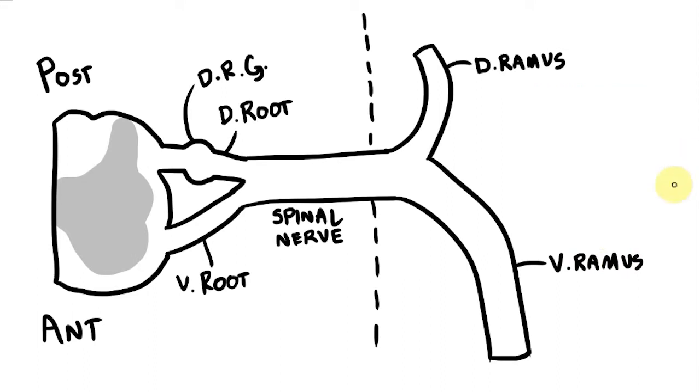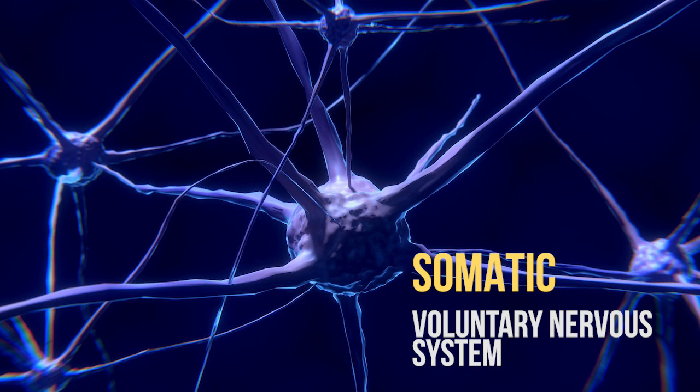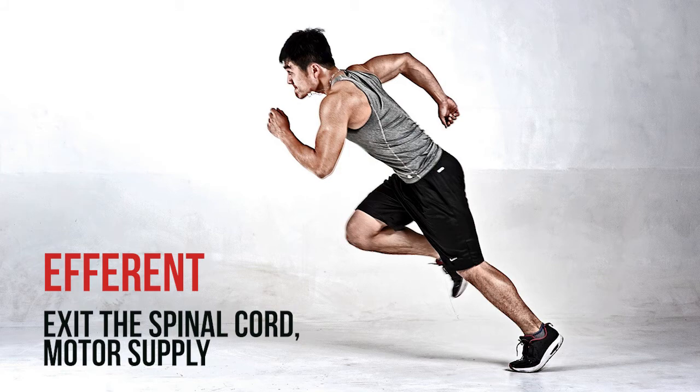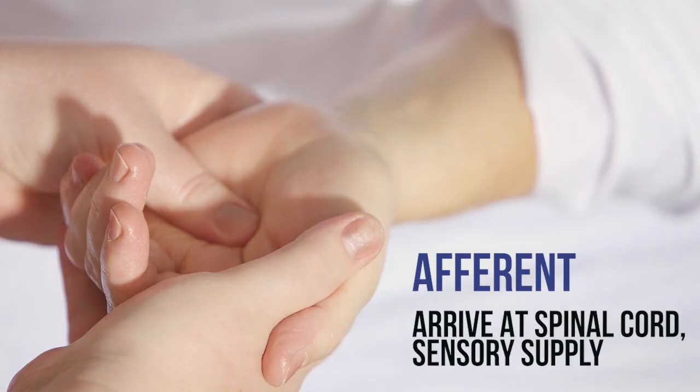Now let's look at the somatic nerve fibers within it. The somatic nervous system is our voluntary nervous system and it consists of two types of fibers. Efferent fibers exit the spinal cord and control skeletal muscles. Afferent fibers arrive back at the spinal cord and deliver sensory information from the skin.